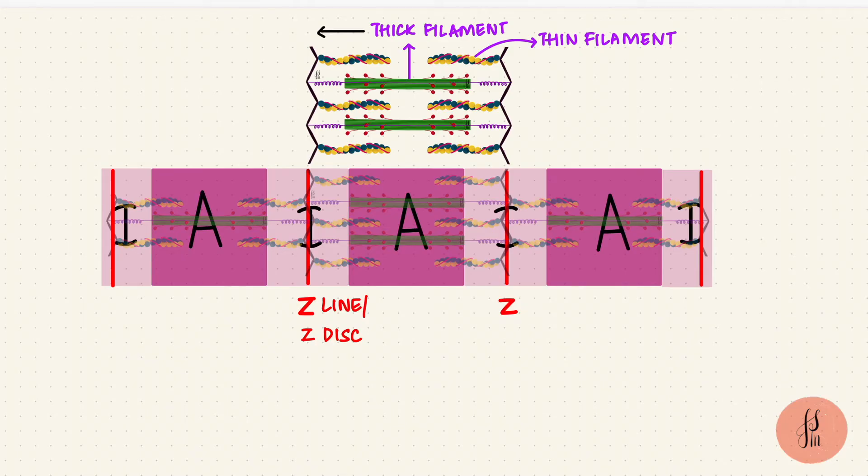The thick filaments are made up of myosin, and the thin filaments have actin along with tropomyosin and troponin. They interdigitate, so they alternate one after the other.